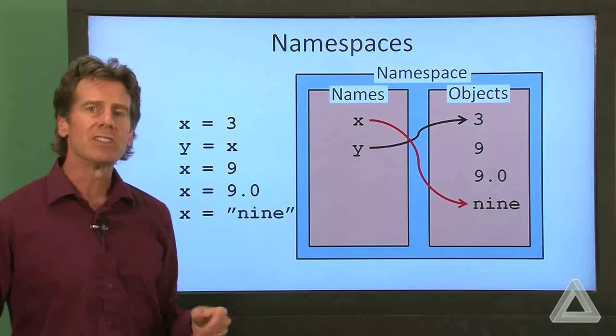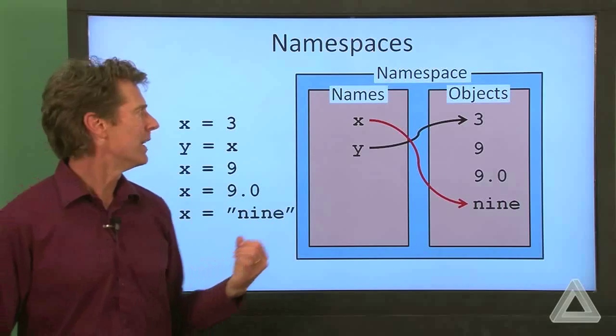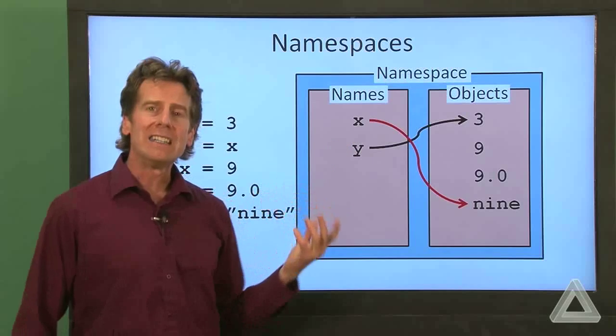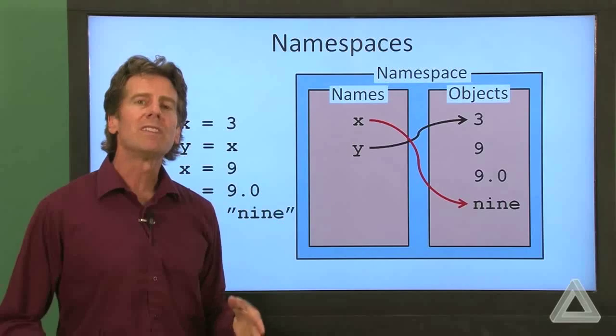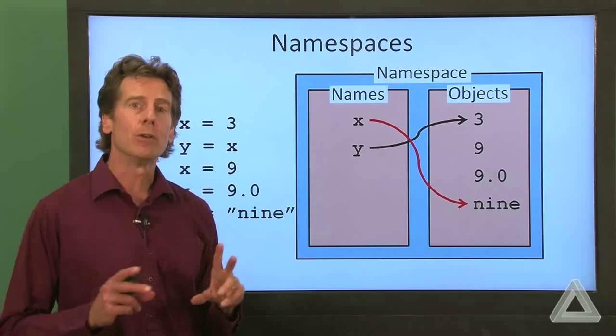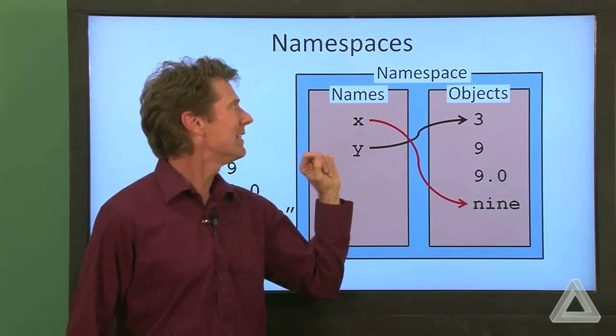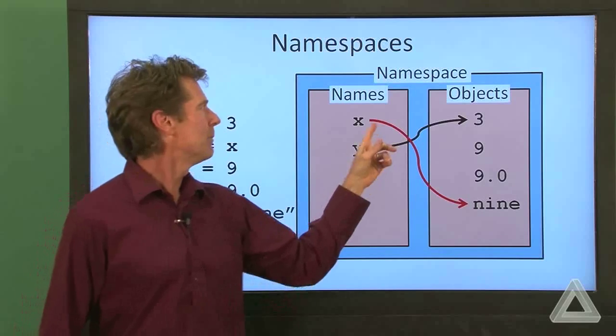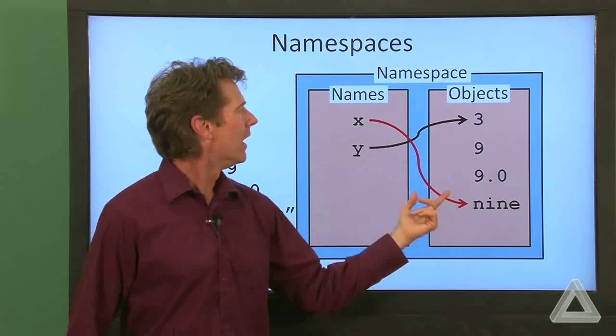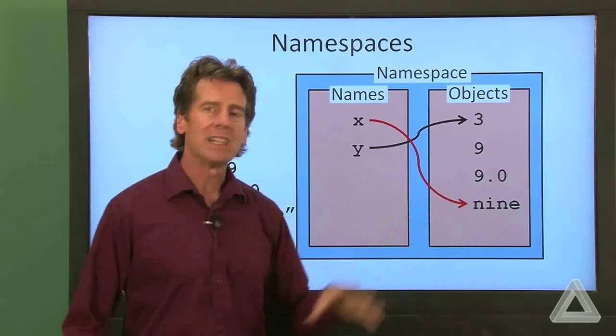Now in some other computer languages, things do not behave this way. A particular identifier or name is always associated with a certain location in memory. In Python, it's not that way. And it's the namespace's job to keep the mapping of names to objects straight.